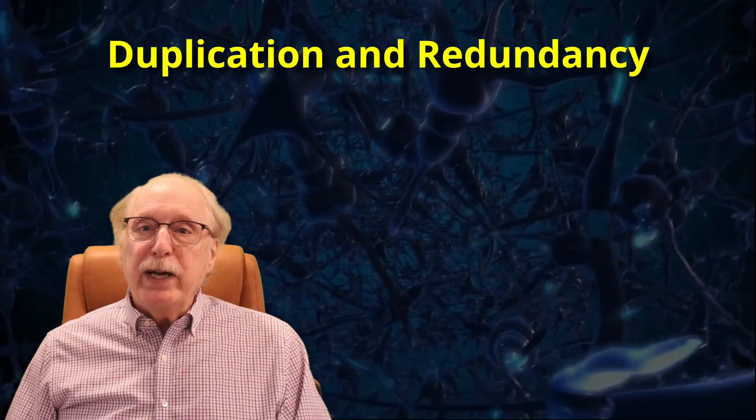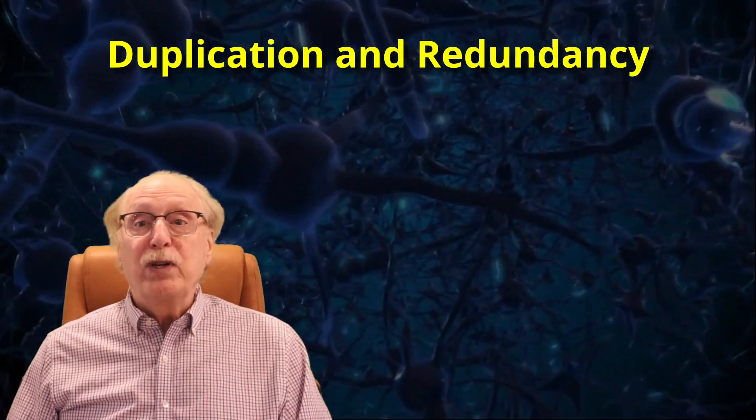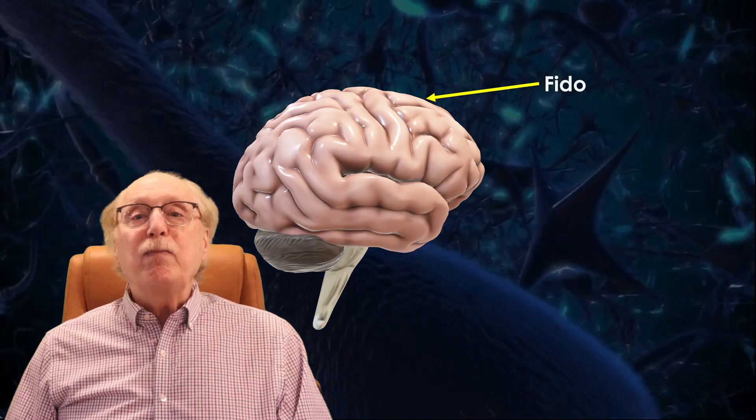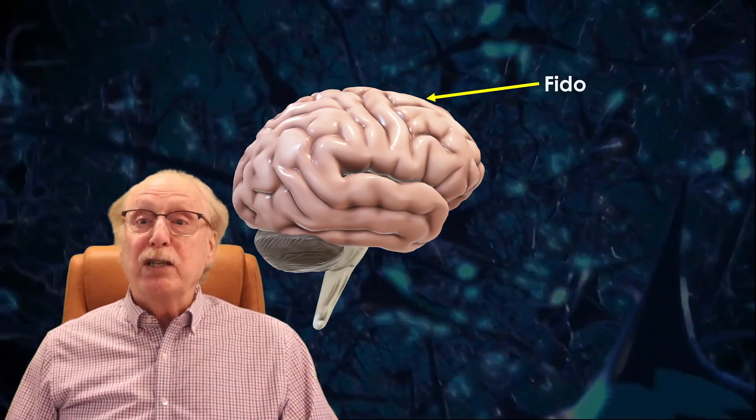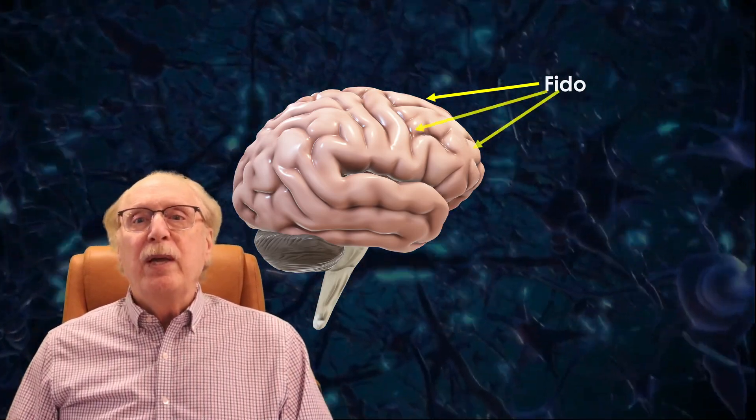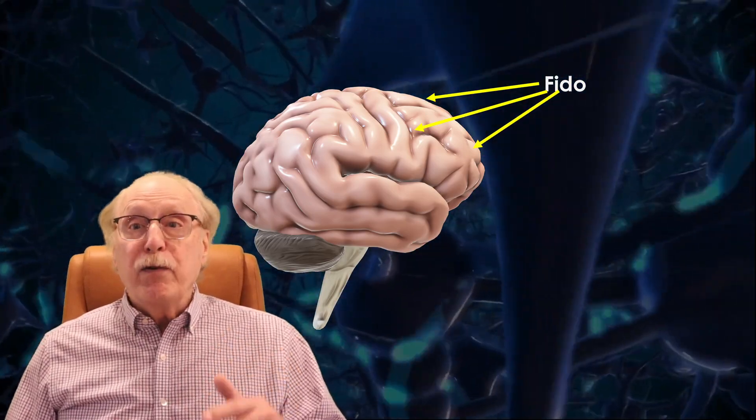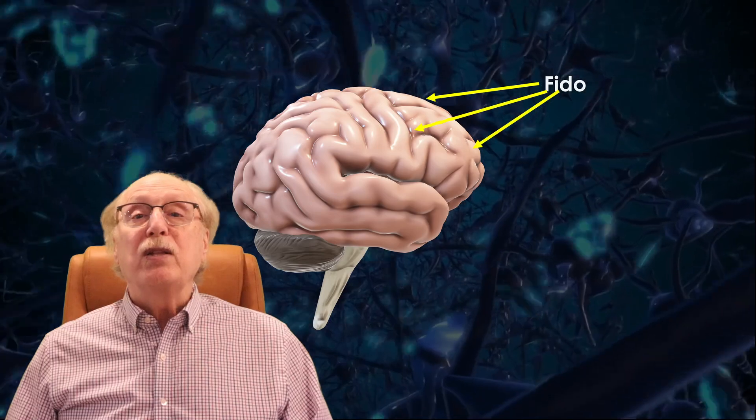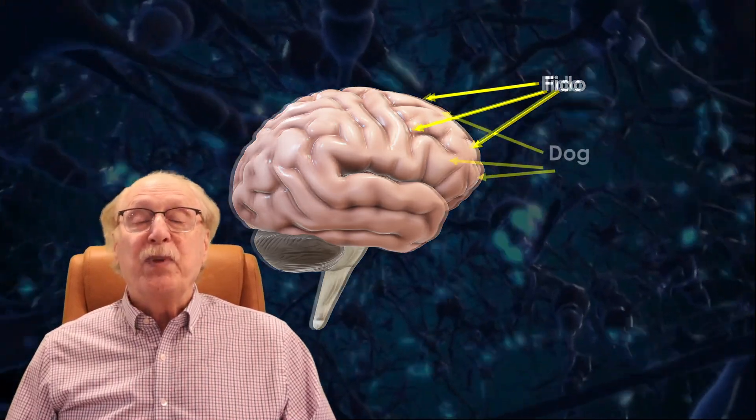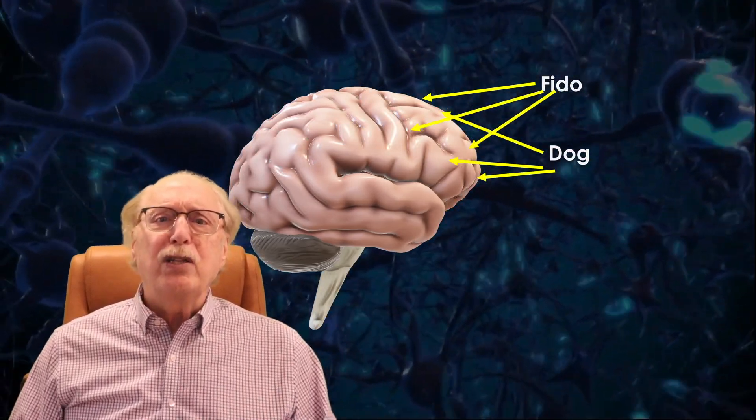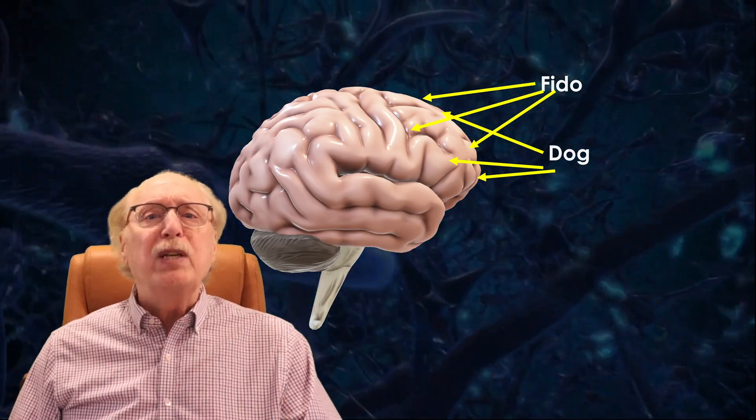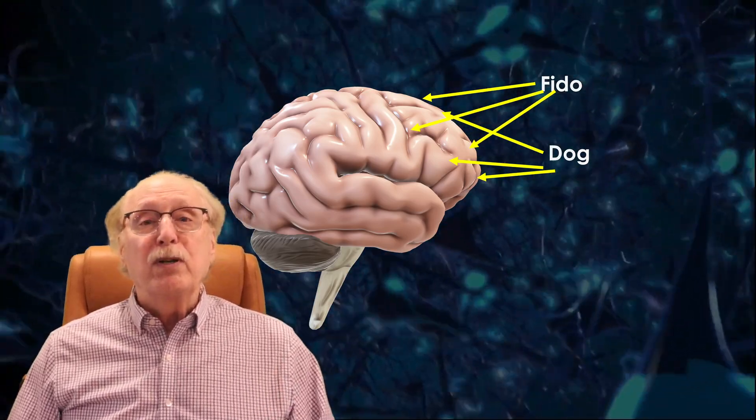Biological brains tolerate and even exploit redundancy. We can simply create multiple neuron clusters for FIDO. These can be interconnected to form a shared identity and further there is no requirement that these clusters be adjacent. In fact, it seems that your knowledge about any individual thing can be distributed in multiple parts of your neocortex.